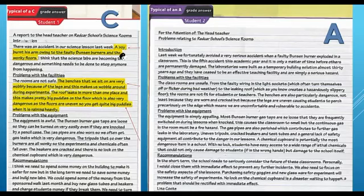So the yellow, in the yellow highlighted section here, a boy burnt his arm owing to the faulty Bunsen burners and the wonky floors compares to the laboratories were built as temporary building solutions almost 30 years ago. My point here is that we shouldn't really be using words like wonky or boy. So that the boy could be a student or a year 10 student, a bit more precise. Wonky floors could be unstable floors. And instead of making it sort of a pronoun of we, it should be a more objective. So the benches that are in the science rooms as opposed to we sit on them. Also towards the end, the recommendations, this one, I think we need to spend more money. So this one finishes with in the short term, the school need to seriously consider the future of these classrooms. So the main differences between the A and C and this one is just the formality of the writing and also the language use. This one is the vocab is a lot more complicated and a lot more extensive. This one is simpler language.